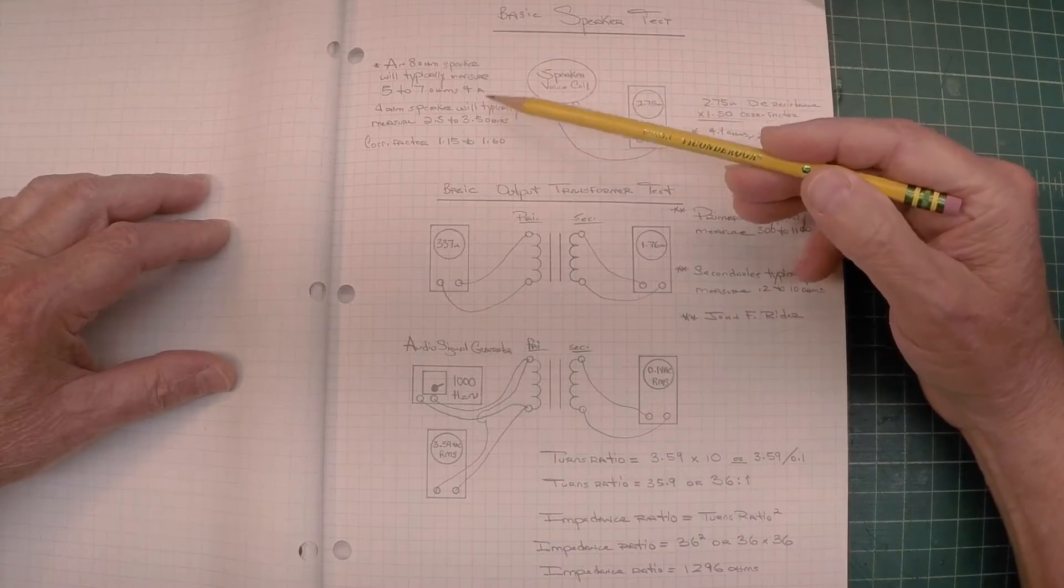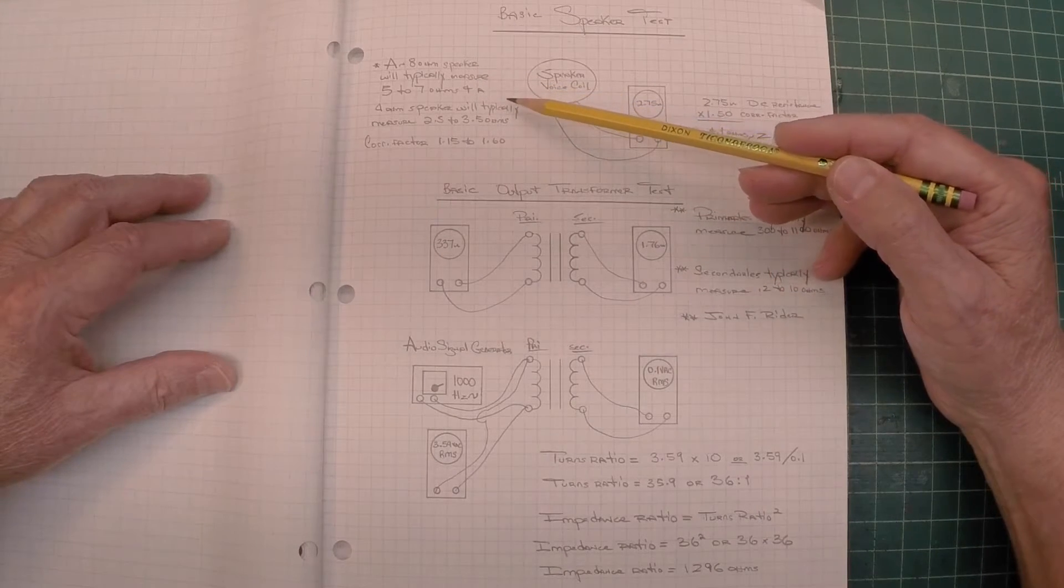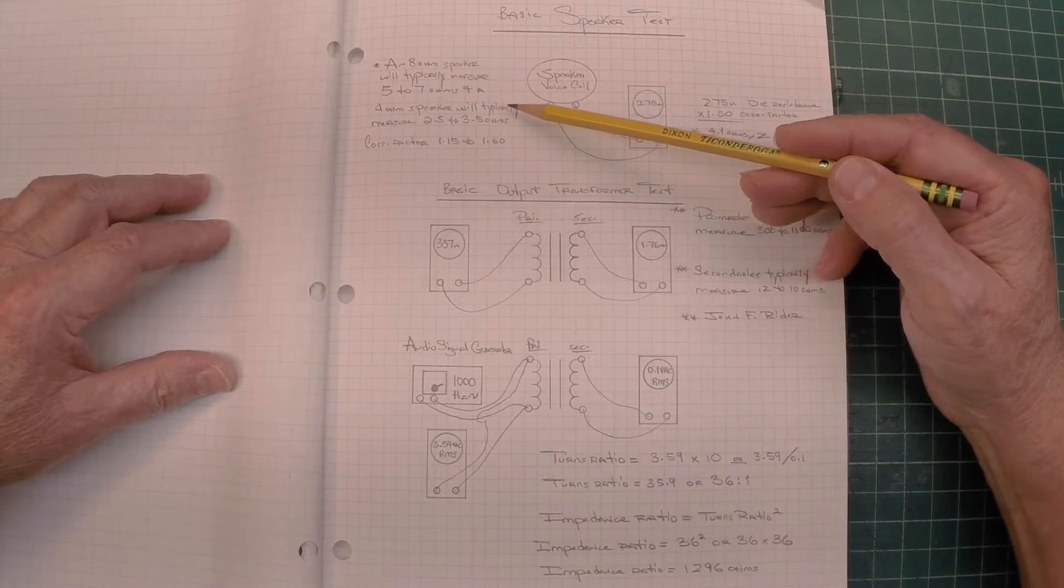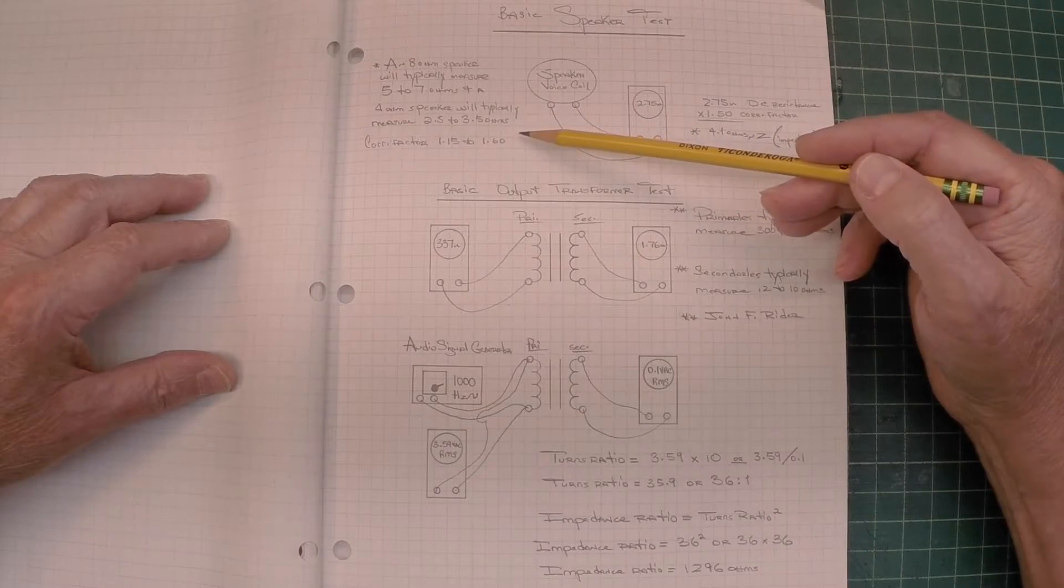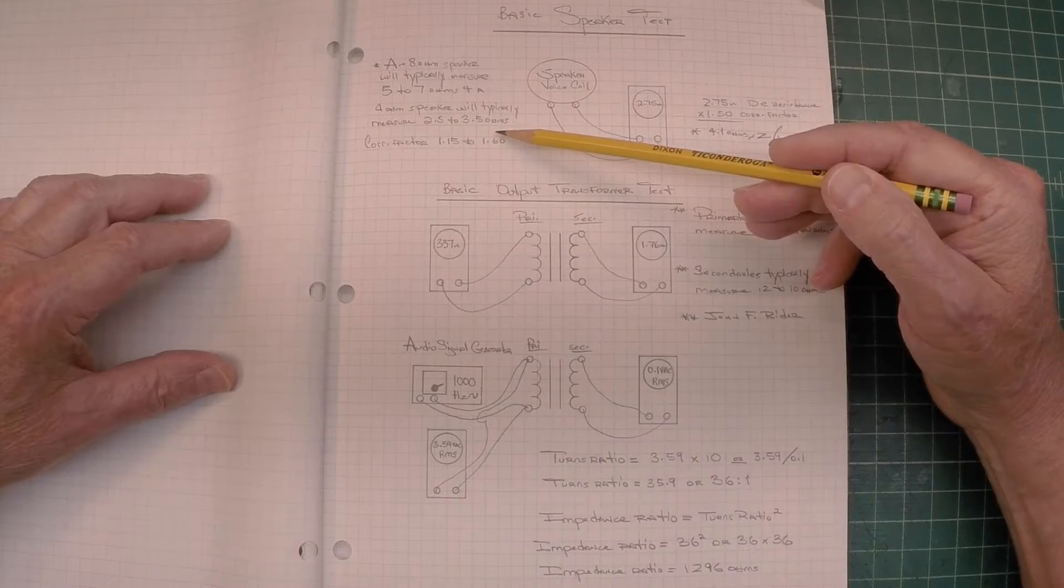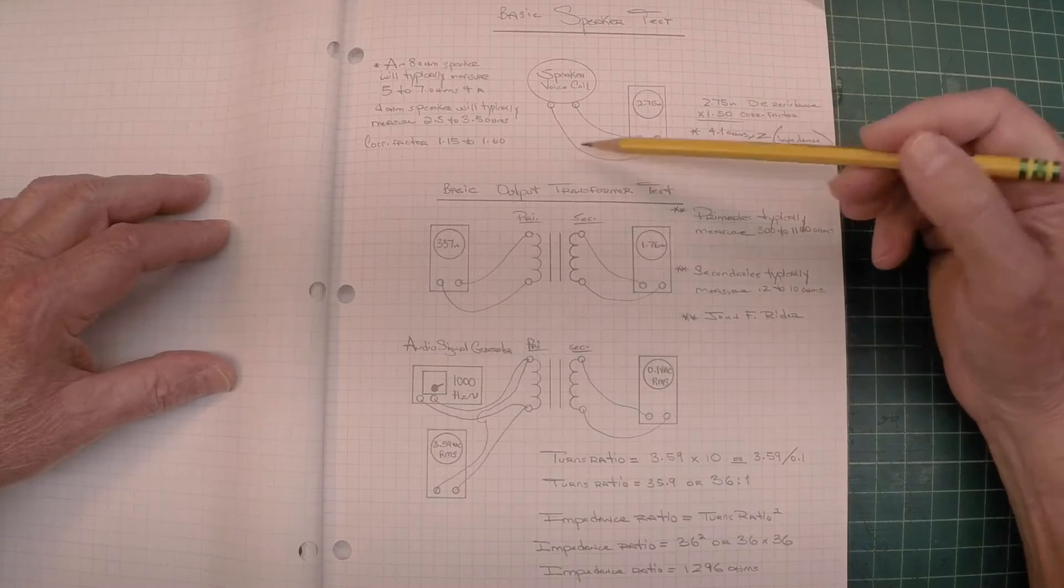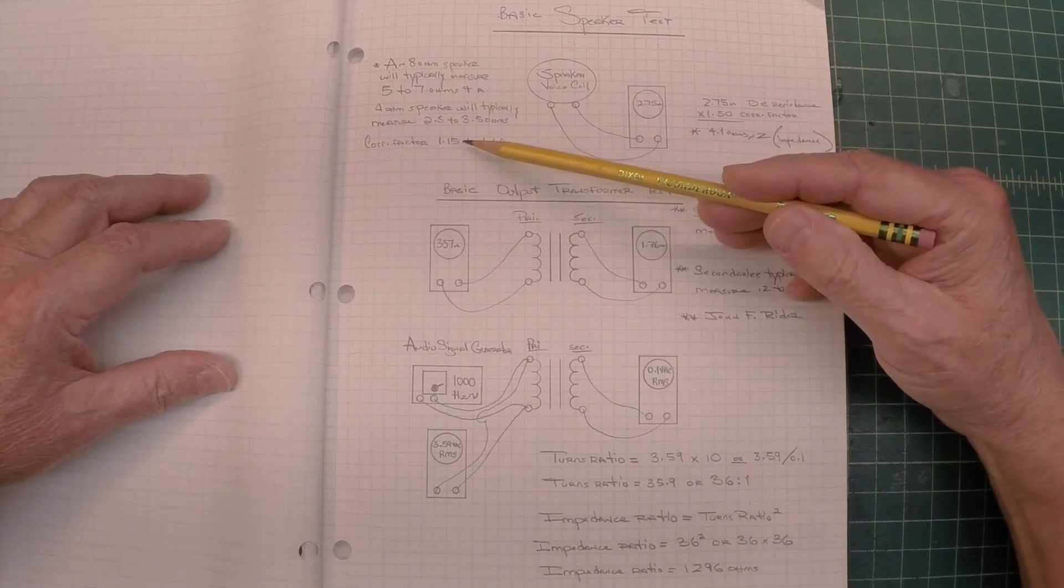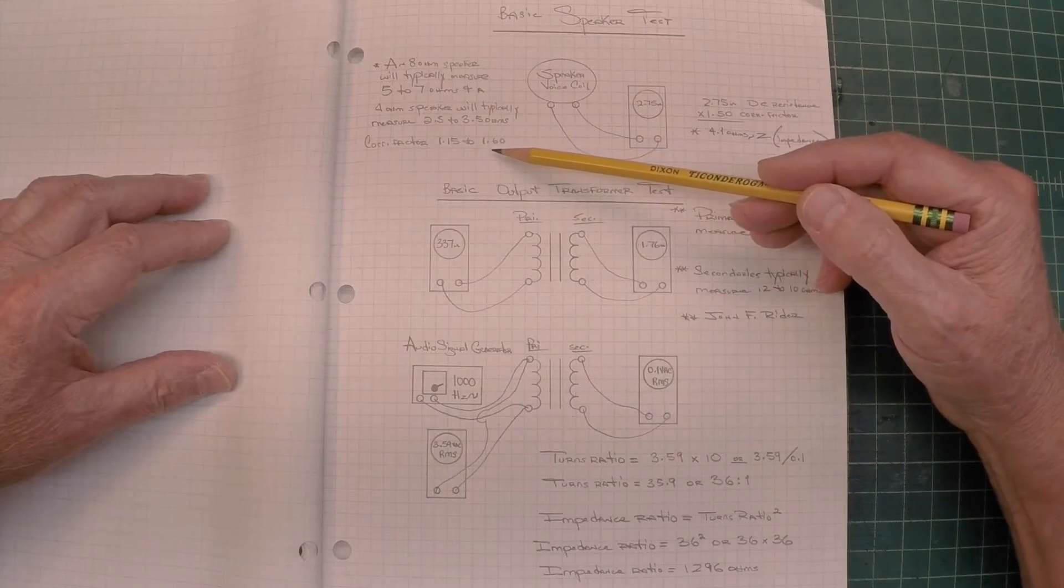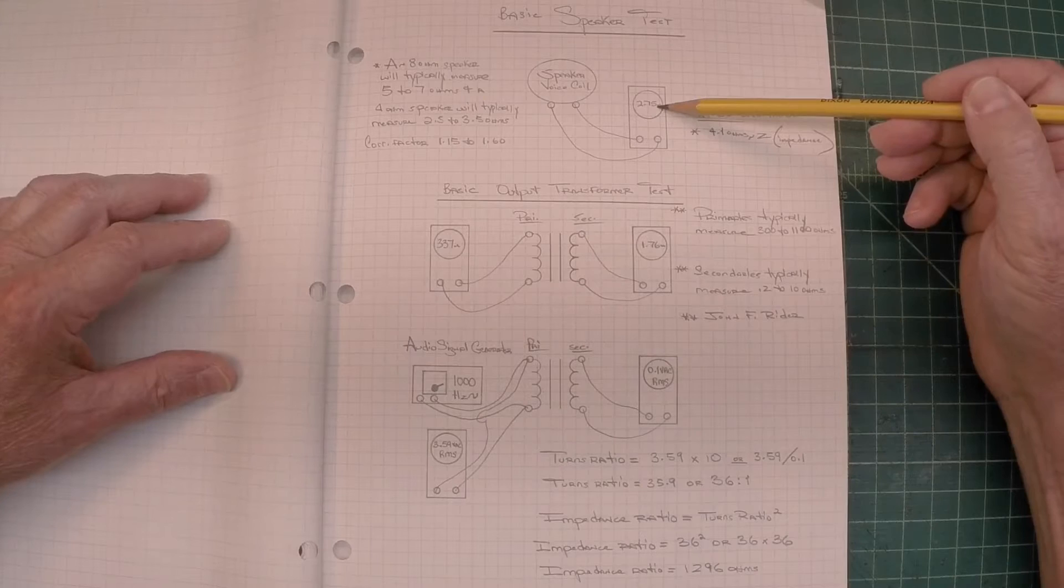Looked at the voice coil DC resistance, measured 2.75 ohms, and others have quoted this: an 8 ohm speaker will typically measure 5 to 7 ohms, and a 4 ohm speaker will typically measure 2.5 to 3.5 ohms.